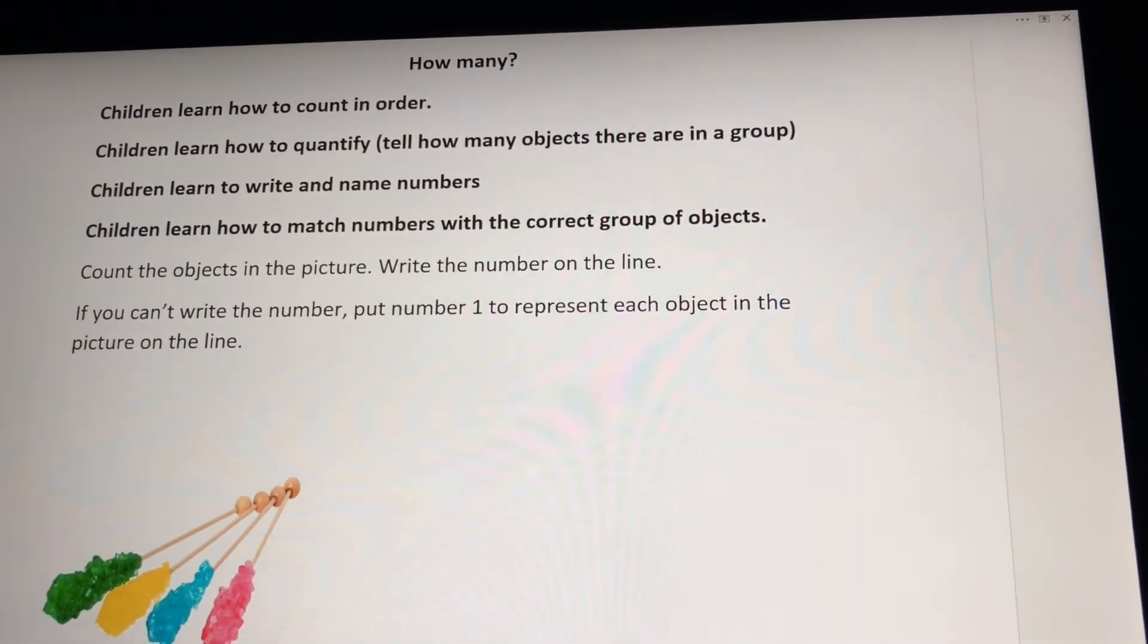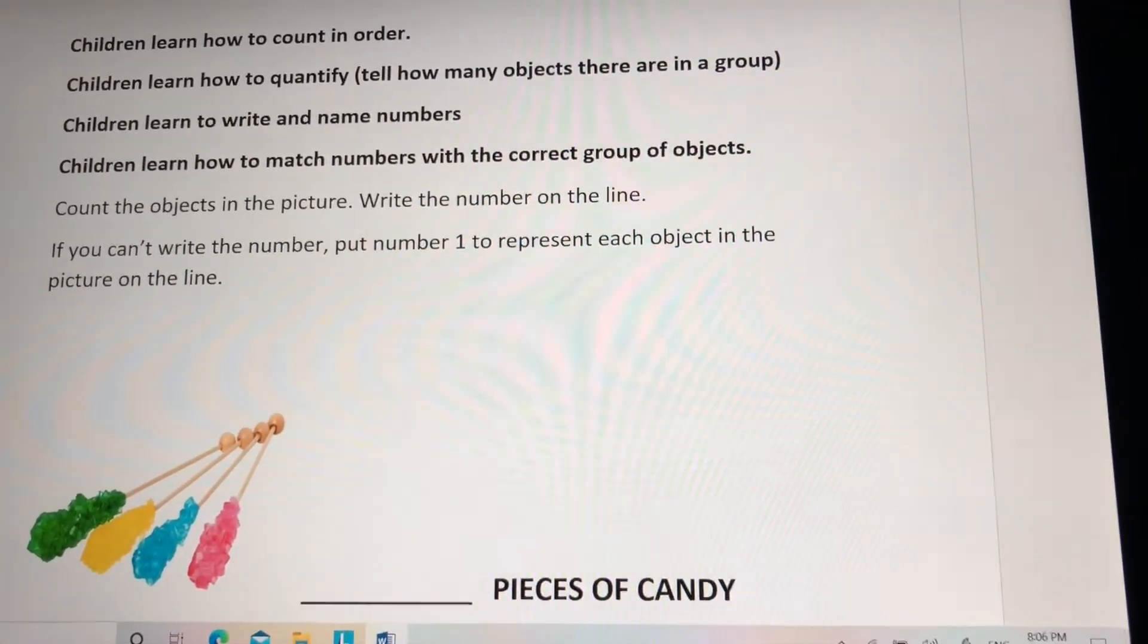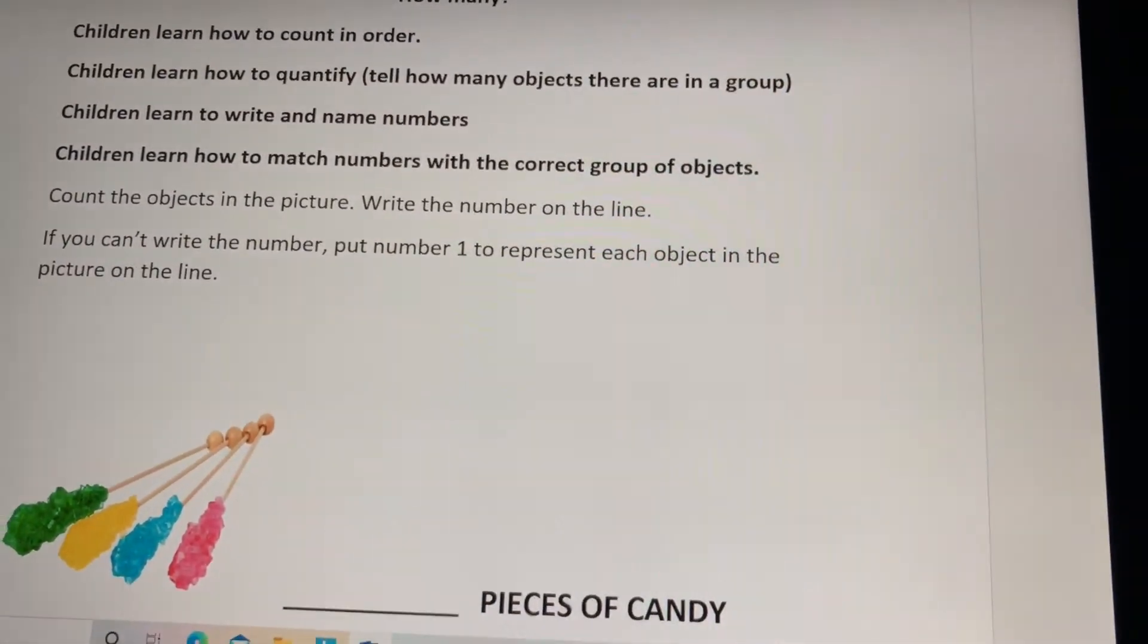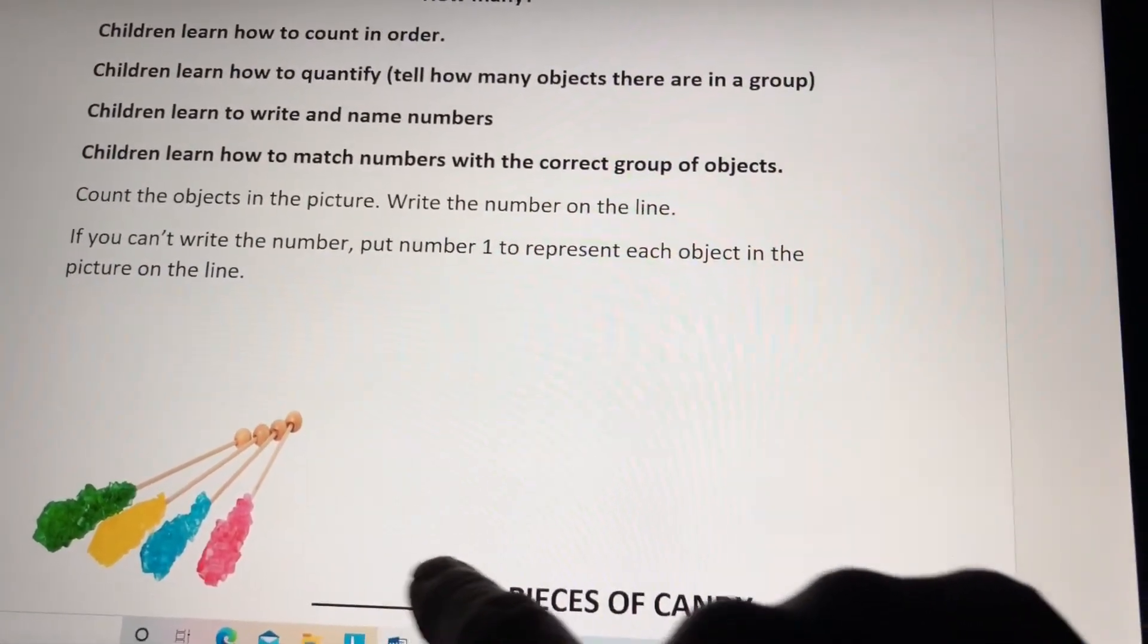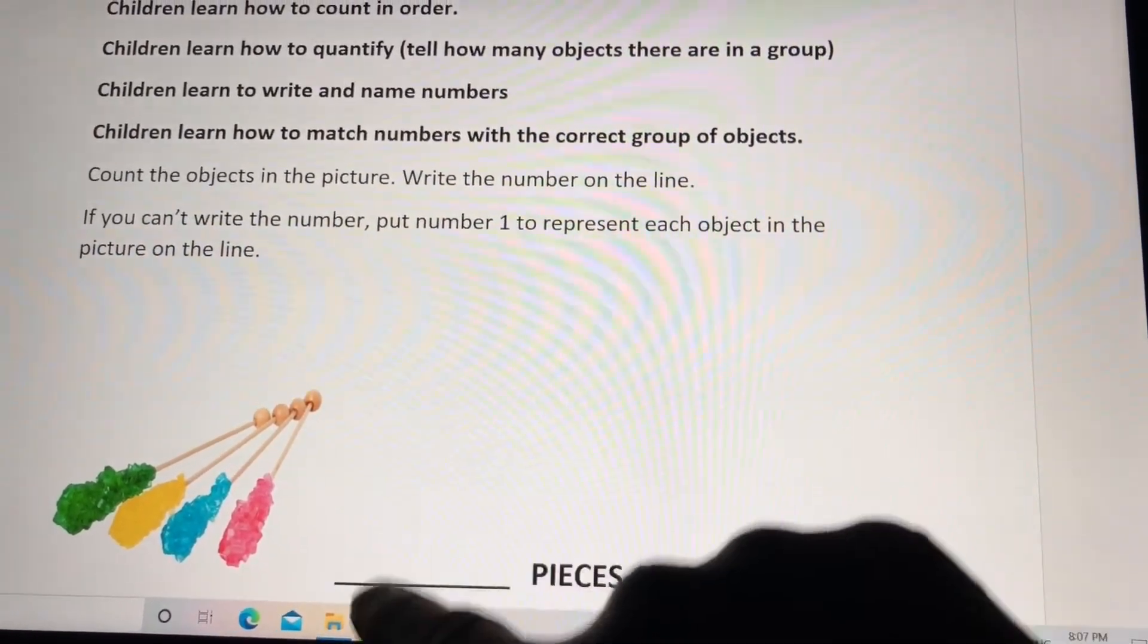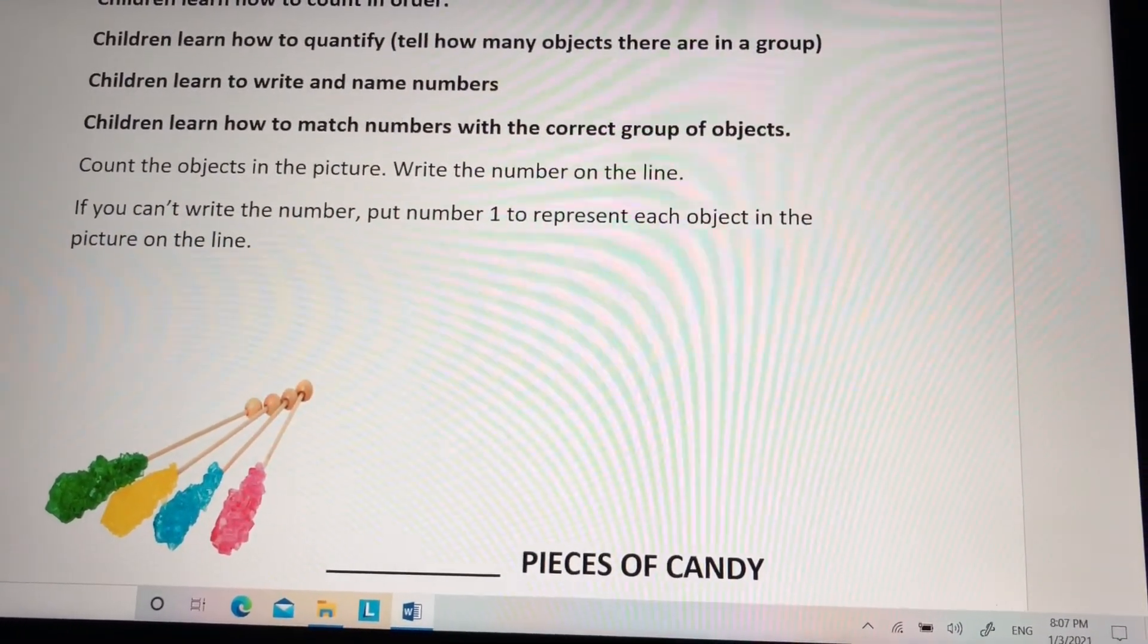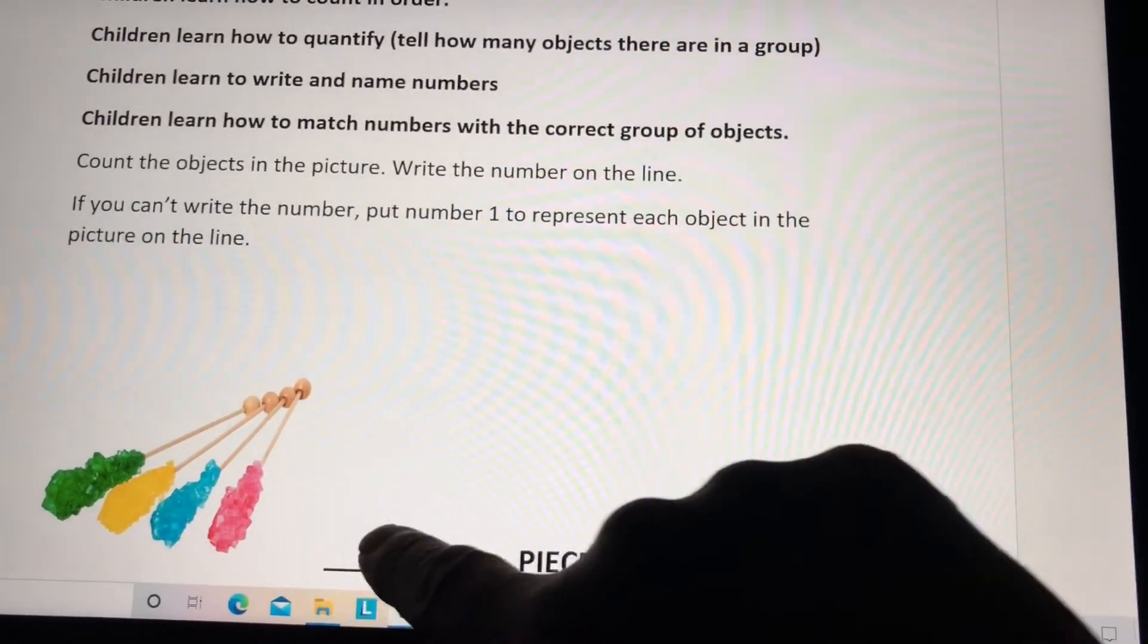In this next activity, you will practice counting groups of objects. It says, how many? Count the objects in the picture. Write the number on the line. If you can't write the number, put number ones to represent each object in the picture on the line.